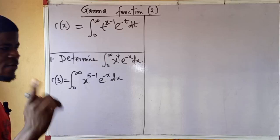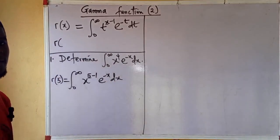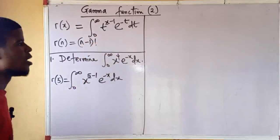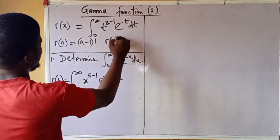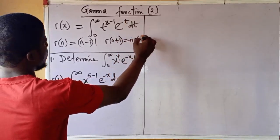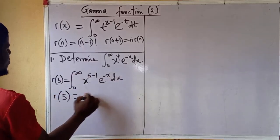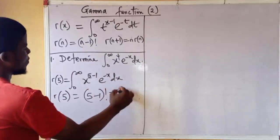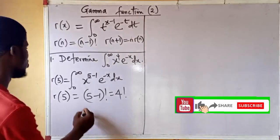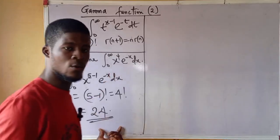This integral is equal to gamma of 5. I gave you the relation that for positive integers n, gamma of n is equal to n minus 1 factorial, and also gamma of n plus 1 equals n times gamma of n. For gamma of 5, I'll use the first relation: gamma of 5 is 5 minus 1 factorial, which is 4 factorial. 4 factorial is 4 times 3 times 2 times 1, and that gives me 24. So this entire integral is equal to 24.